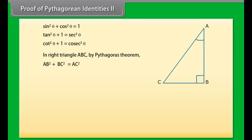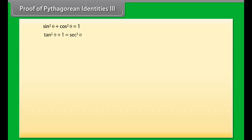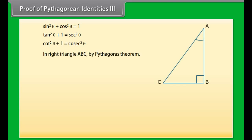Proof of Pythagorean identity 2. Similarly we will prove these two identities. In right triangle ABC, by Pythagoras theorem, AB square plus BC square is equal to AC square. Dividing all the terms by AB square we get: AB upon AB whole square plus BC upon AB whole square equals AC upon AB whole square. That is, 1 plus tan square A is equal to sec square A. This is true for all A such that 0 degree is less than or equal to A, which is less than 90 degree.